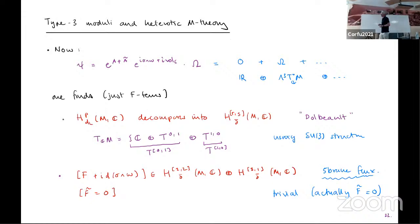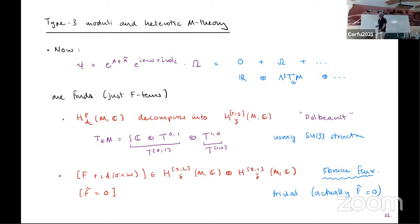I've run out of time, but let me briefly mention type three. In this case there are no functions but there are three-forms. This funny cohomology decomposes into Dolbeault cohomology on the six-dimensional space — with one extra direction you really get something like Dolbeault, which is something you can calculate. The flux is allowed: there's four-form flux and you're allowed to have M5-brane sources. The main point is that you can calculate exactly what the moduli are.